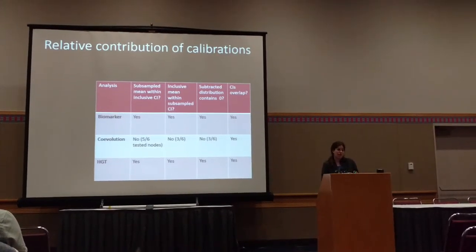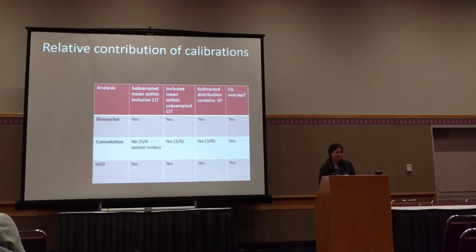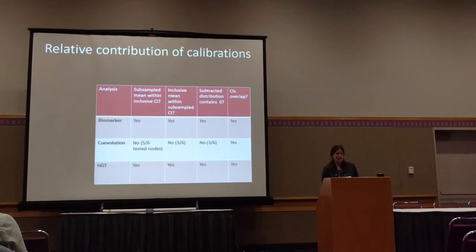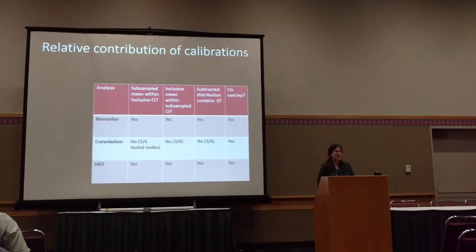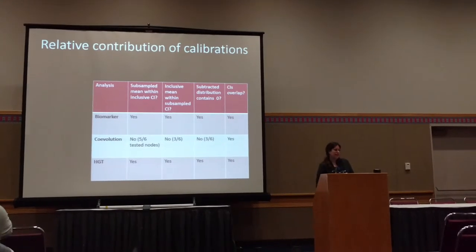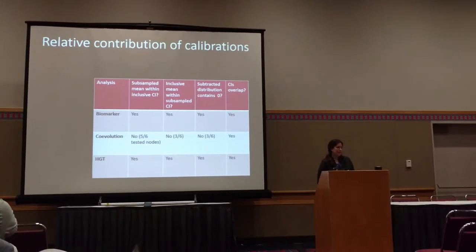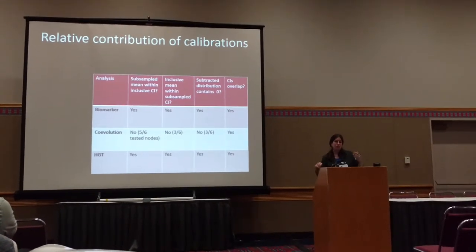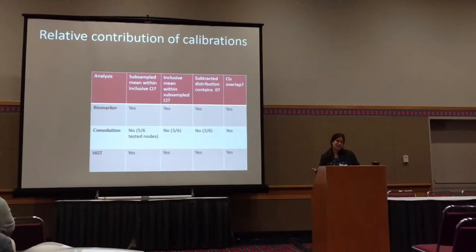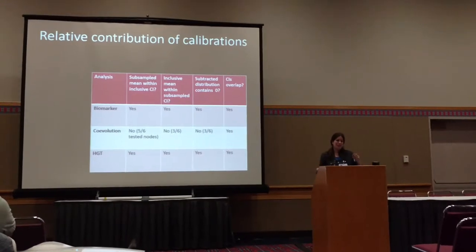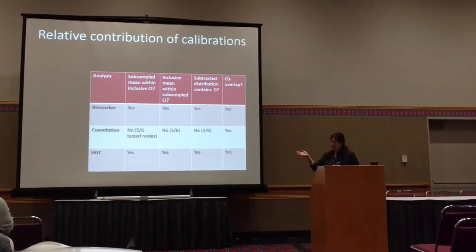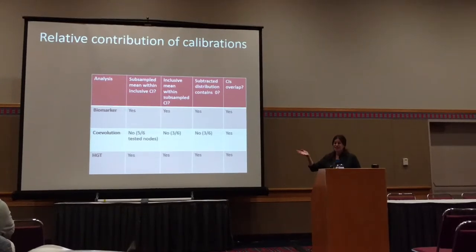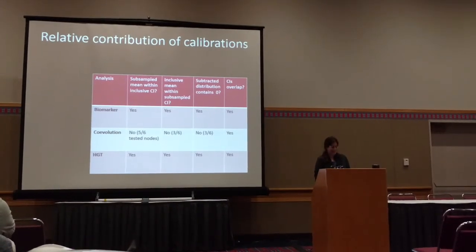I think the reason those contributed more significantly to the molecular clock is because they provided both a maximum and a minimum age, giving a narrower confidence interval in the prior. Of course, using an a posteriori method like this won't perfectly describe the evolution of the priors, because the actual prior incorporated is based on the interaction of different priors — but there are so few: 13 calibrations for 203 taxa, which is reasonable, especially since we're working with bacteria.